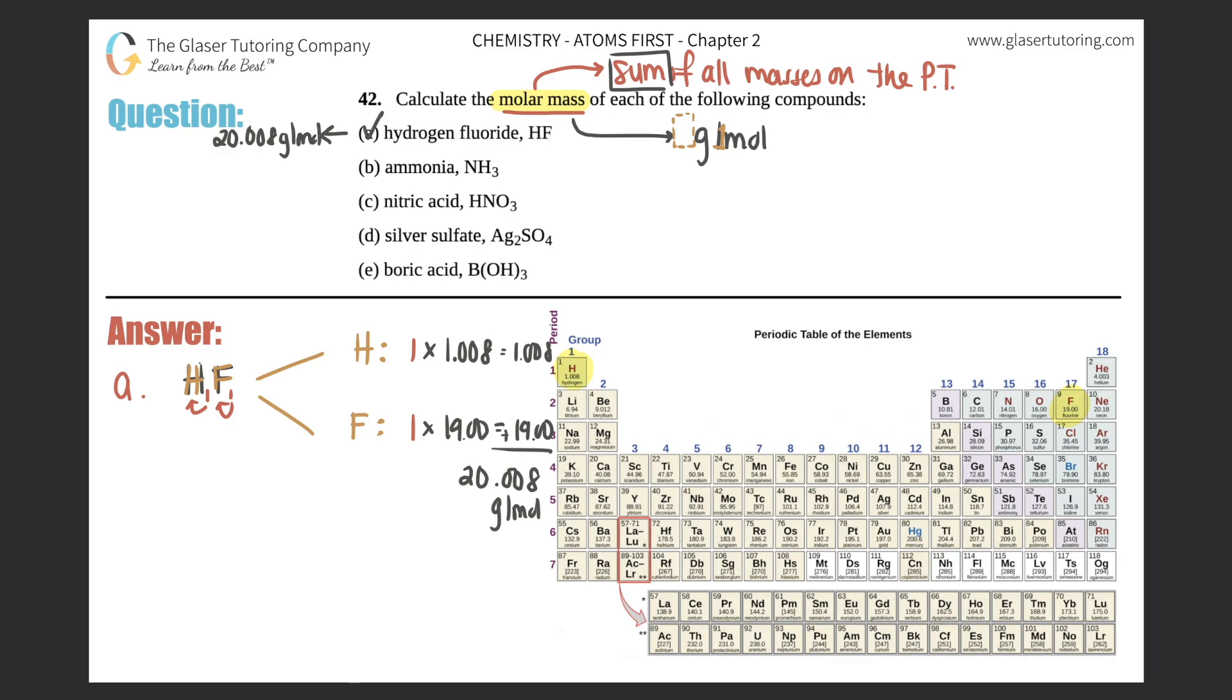A is done. Moving right along - b, we have NH3. So what are the elements that are involved in ammonia? There's two elements, right? There's N and there's H. How many N's are there? There's only one. There's one nitrogen and how many hydrogens are there? There's three.